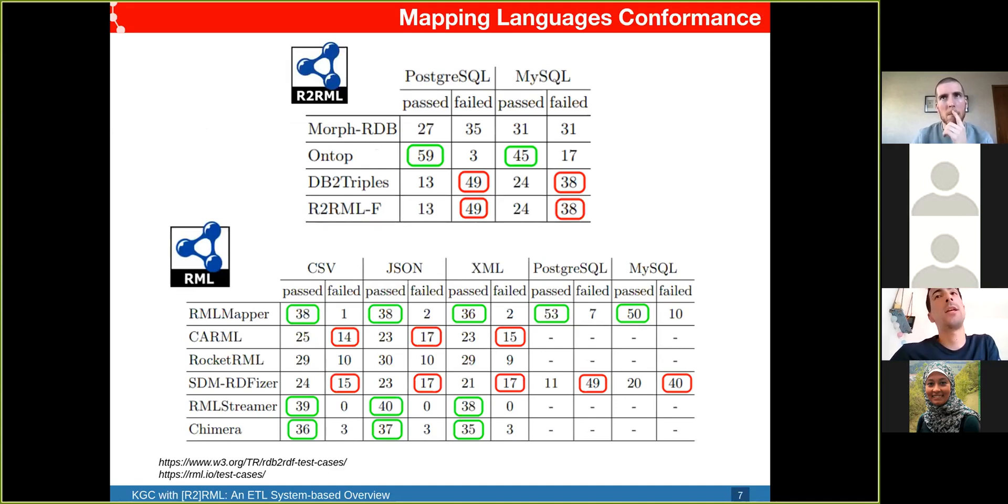Here we have the results for the test cases. In the top we have a table for the R2RML engines. OnTop passes the most test cases. Morph-RDB fails quite a bit because it generates an empty graph when it should generate errors. DB2Triples and R2RML-F are only able to pass a few test cases because they do not support delimited identifiers. They get the same results because R2RML-F is based on DB2Triples.